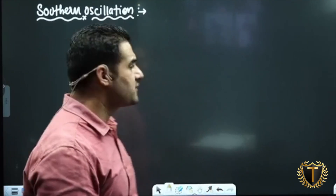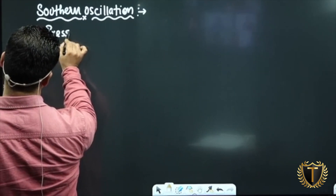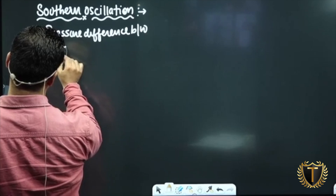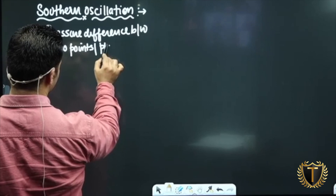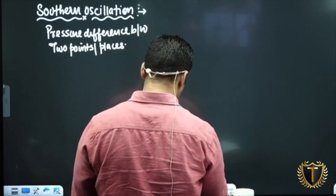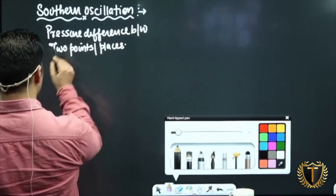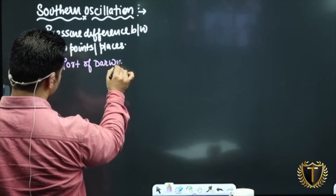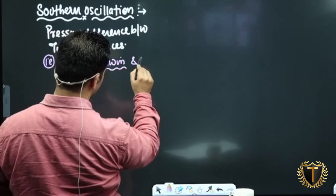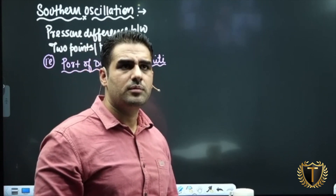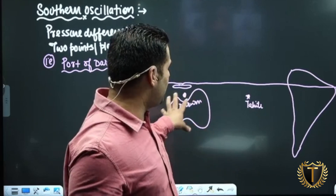Southern Oscillation is a pressure difference between two points or two places. When we talk about this pressure difference, we take two places: Port of Darwin and Tahiti. Port of Darwin is in Australia and Tahiti is in the central Pacific. These are the two reference places for Southern Oscillation.